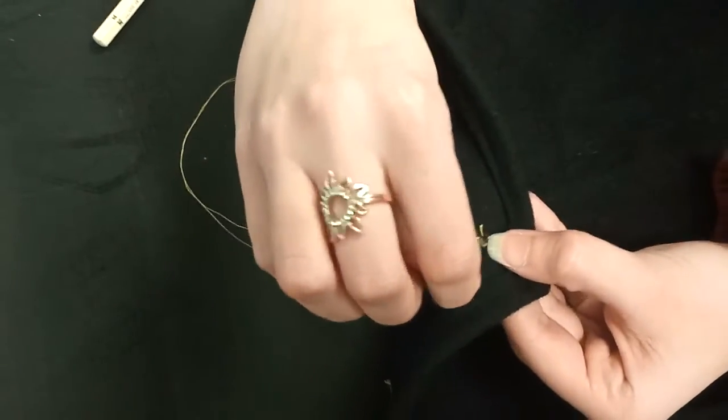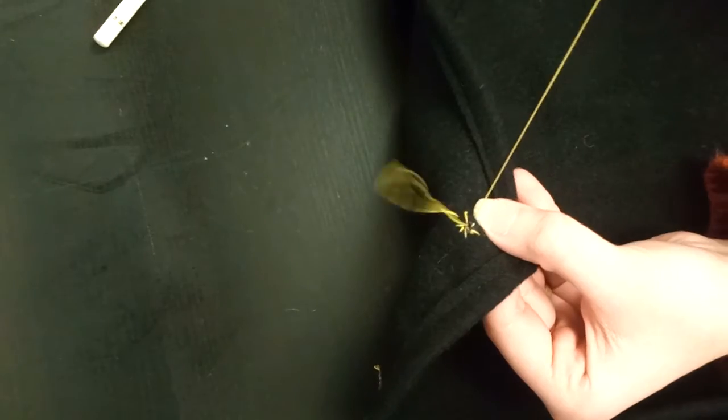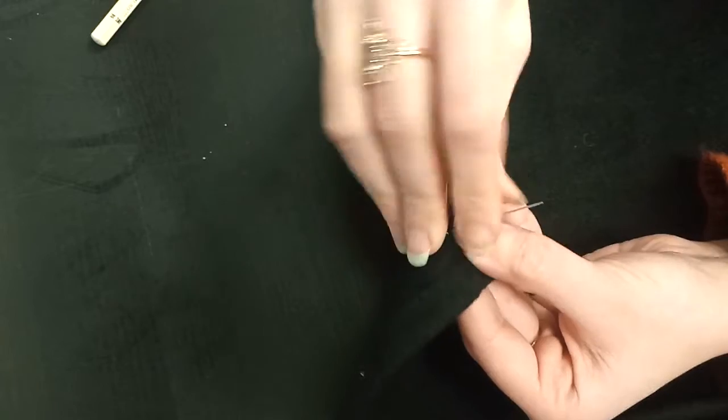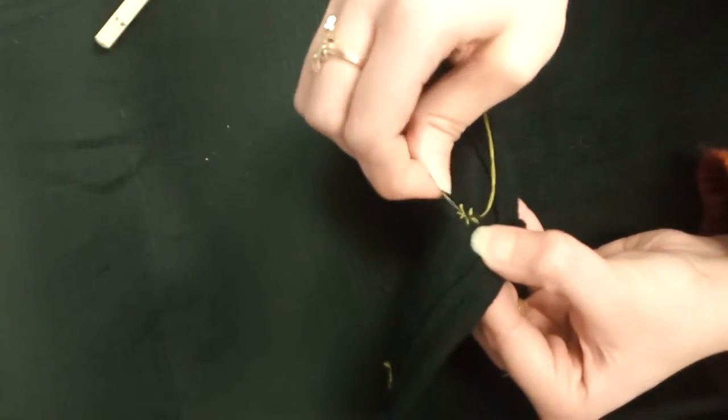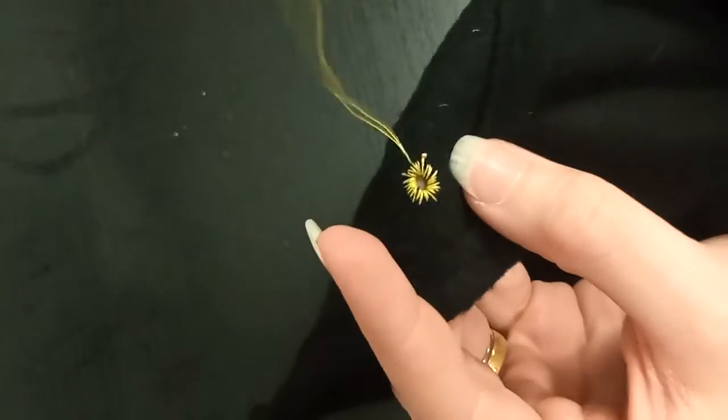Then grab your needle and we're going to fill in all of these gaps. You might need to go around it five or six times just to fill it in. So you have something a little like this. We're going to grab our awl again and just push it through once more, just stretching out that hole.